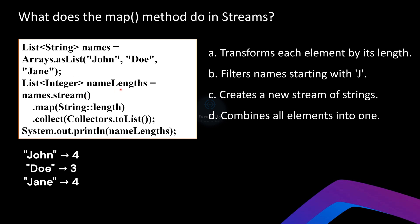We use the `collect` method to gather the result back into a list. This creates a new list called `nameLengths` containing the lengths of the names — that is 4, 3, 4. So the output of the result will be [4, 3, 4].